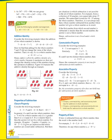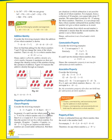The first property of subtraction is the closure property. Consider the following examples: eight minus three equals five, and eight minus eight equals zero. But eight minus ten — what is the result? In general, if a and b are two whole numbers, then a minus b will be a whole number only if a is greater than or equal to b.